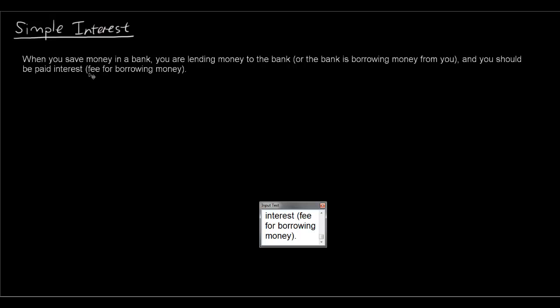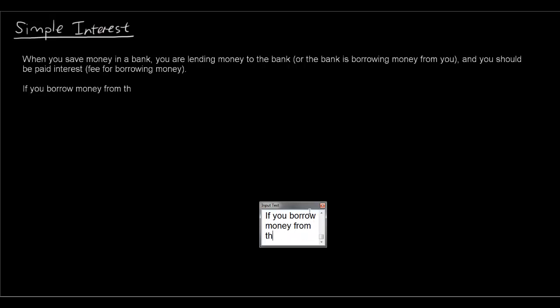So the bank should be paying you money for borrowing that money from you. Interest is the fee that somebody pays for borrowing money from someone else. So when you are saving money in the bank, the bank is borrowing money from you. You could also borrow money from the bank, and then you will be paying the bank interest for borrowing that money.